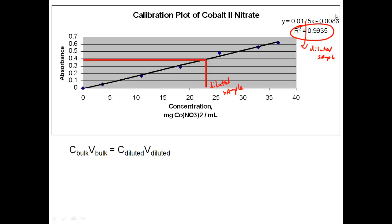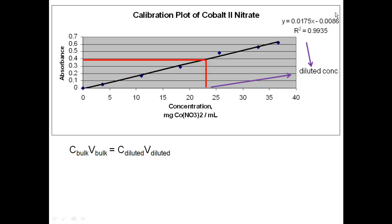Even using the y-equation from the Excel plot still gives you the concentration of the diluted sample. You need to report the bulk sample concentration. We had to dilute that sample — we took five mils of the unknown and five mils of water — so we need to get from the diluted sample concentration back to the actual bulk sample concentration using CV = CV.